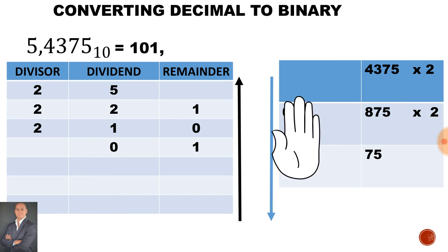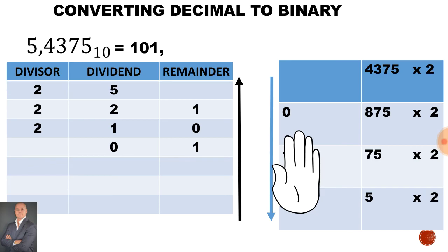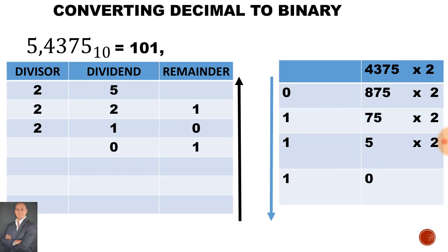Now we must ignore the remainder. In our calculator, we say 0.75 multiply by 2, and 0.75 multiply by 2 gives us an answer of 1.5. Once again, we must ignore that side of the column, because that is our answer. Inside our calculator, we say 0.5 multiply by 2, and that gives us 1. We are finished — there's nothing else left to calculate. When we read the answer, we read from the top going down. Therefore the remainder of the binary number will be 0, 1, 1, 1.